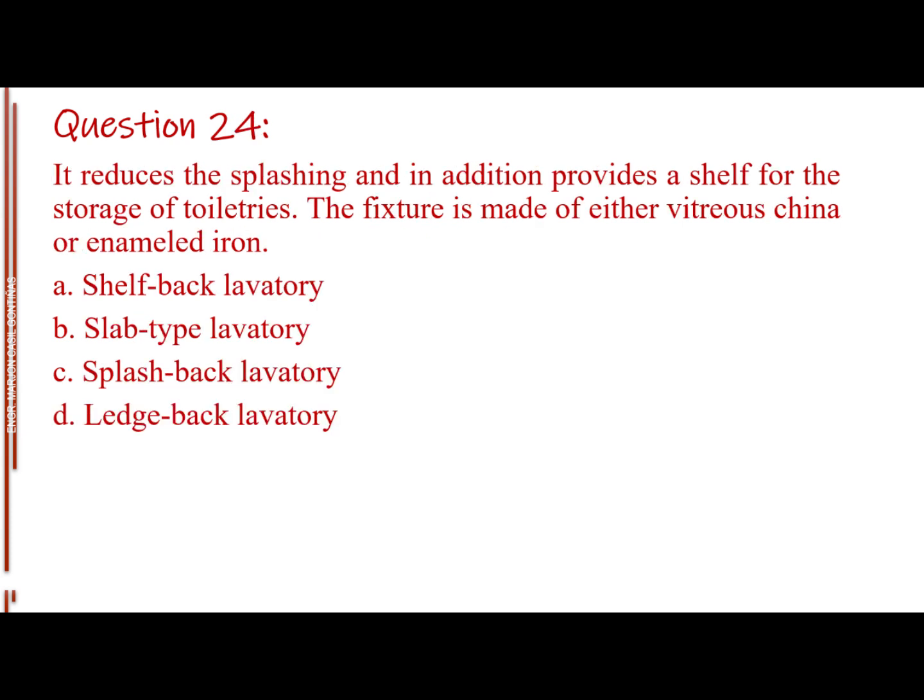Question number 24. It reduces the splashing and in addition provides a shelf for the storage of toiletries. The fixture is made of either vitreous china or enameled iron. Letter A, Shelf-back lavatory. Letter B, Slab type lavatory. Letter C, Splash back lavatory. Letter D, Ledge back lavatory. The answer is Letter A, Shelf back lavatory.